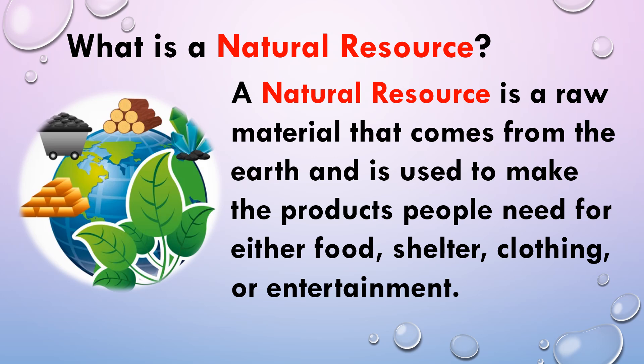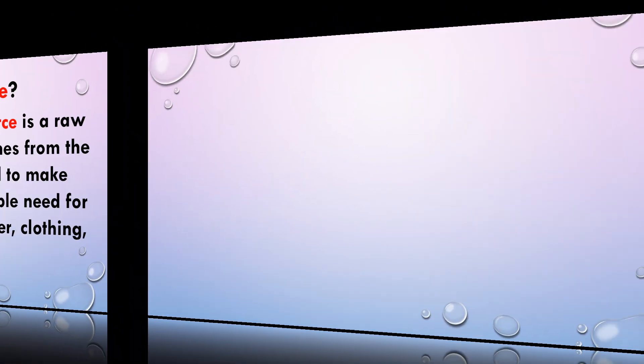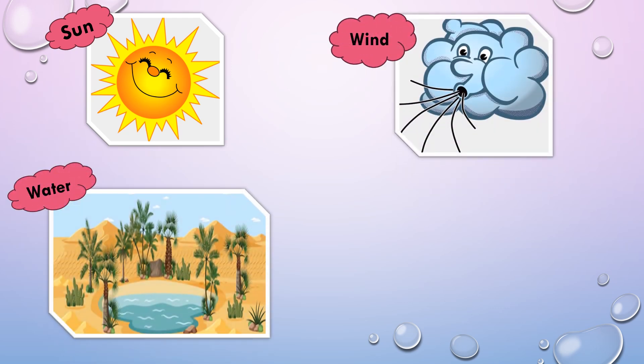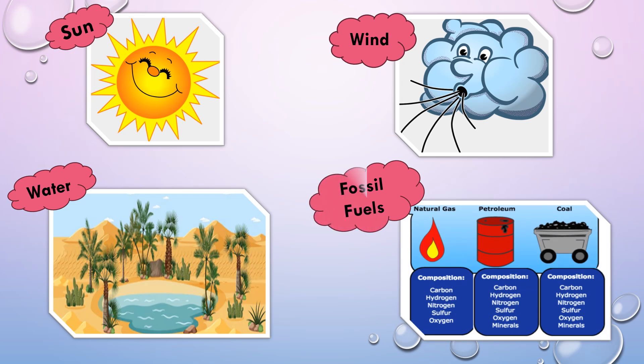Natural resources are used for food, shelter, clothing, or entertainment. Some natural resources are sun, wind, water, and fossil fuels. Fossil fuels are natural fuels formed from the remains of plants and animals buried deep inside the earth. They take millions of years to form.